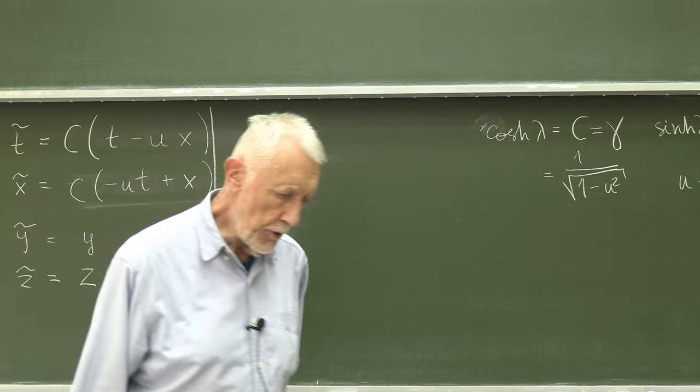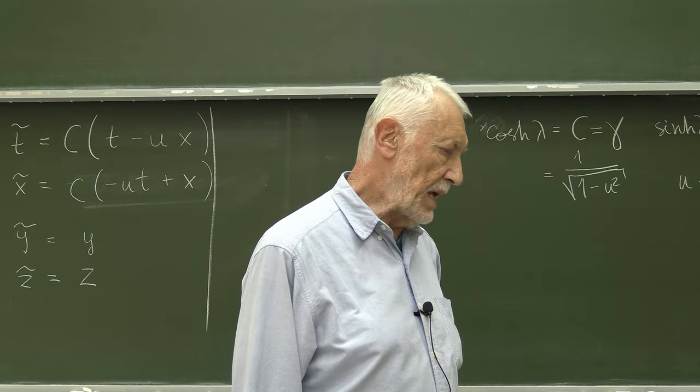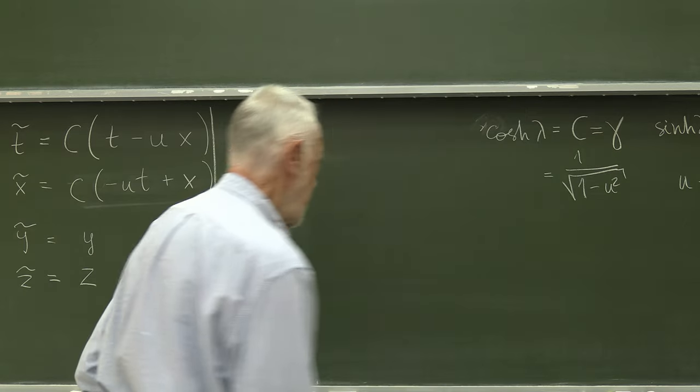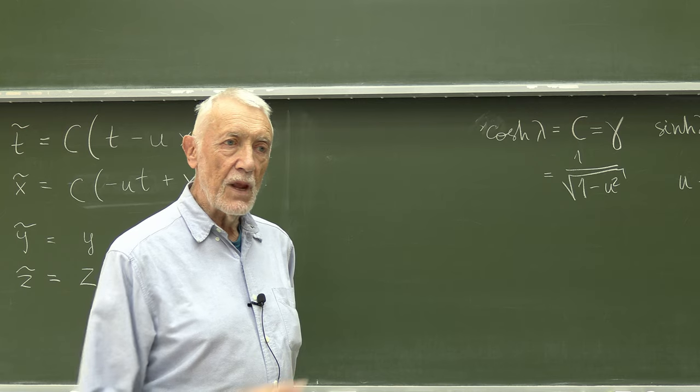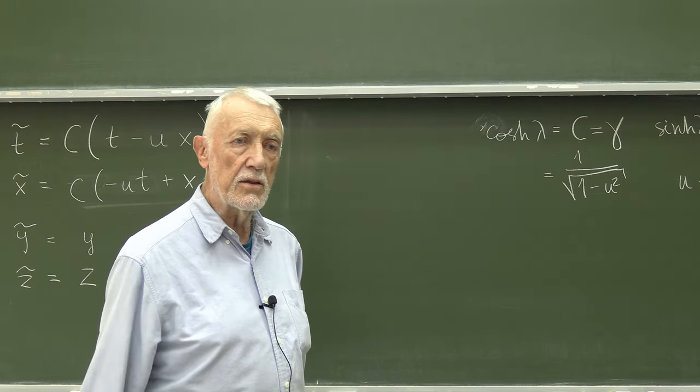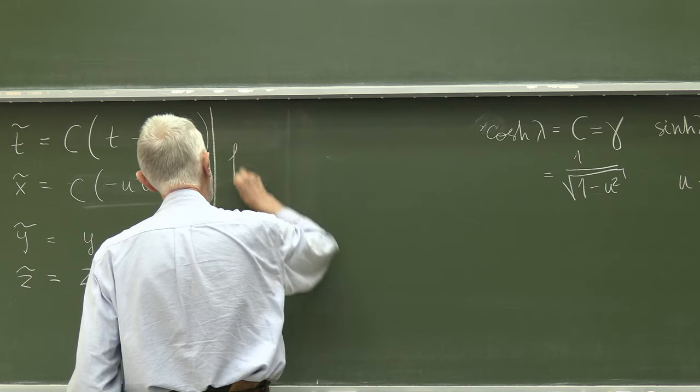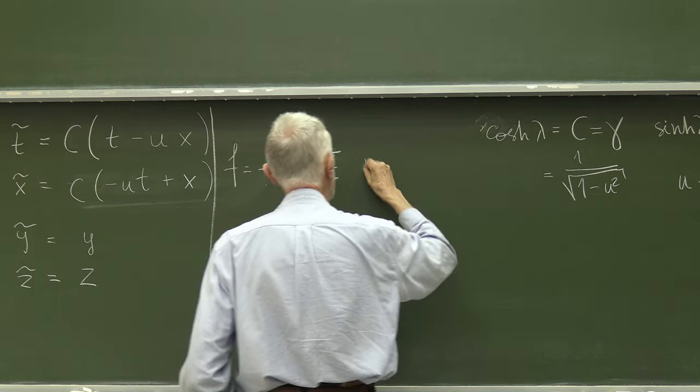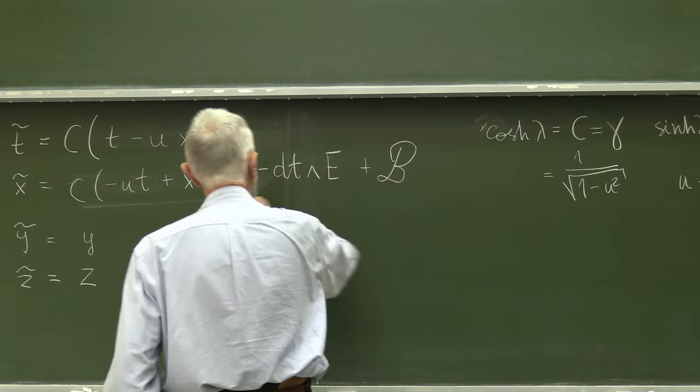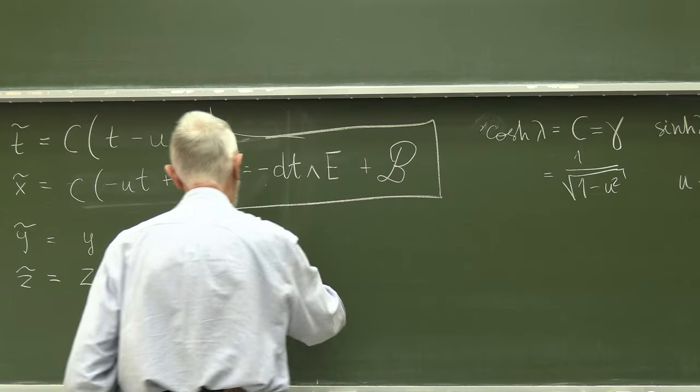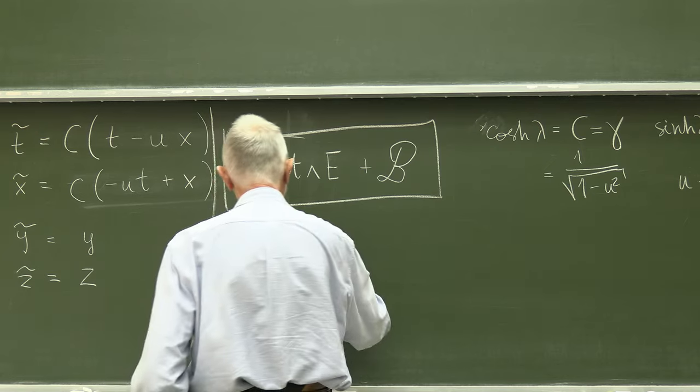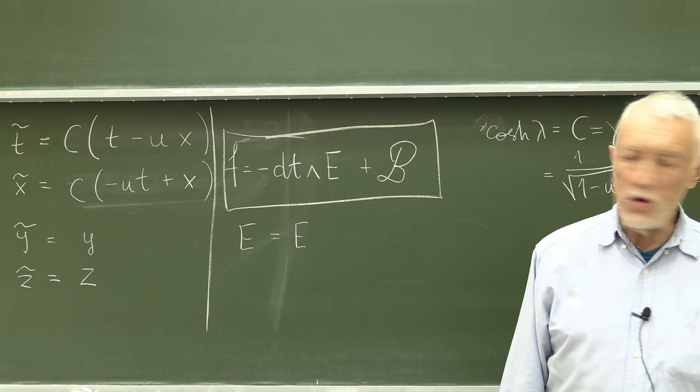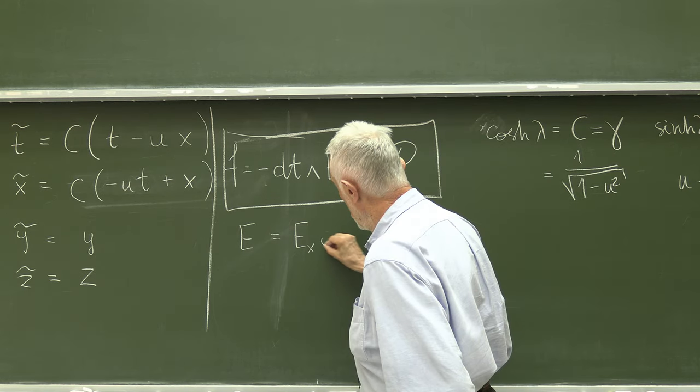I have told you that the electromagnetic field is considered as a two-form or covariant tensor, which is totally anti-symmetric. This F equals minus dT wedge E plus B. This is the formula to remember. E is just a one form, which is just a covector, and it is much more natural to treat it as a covector.